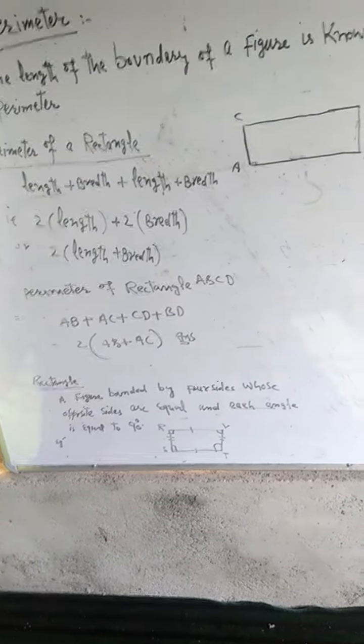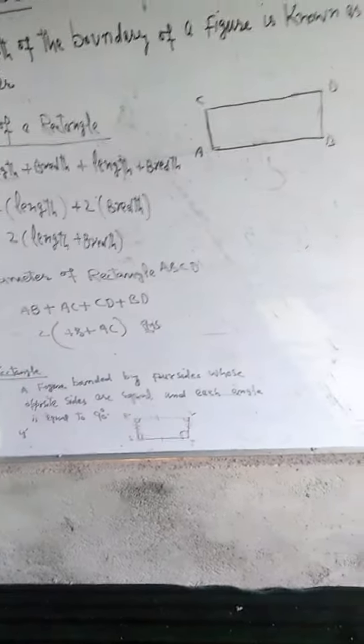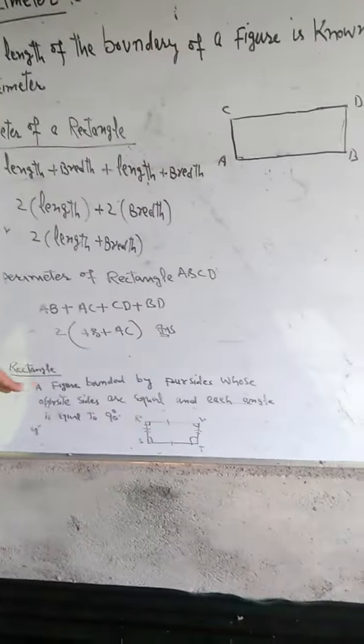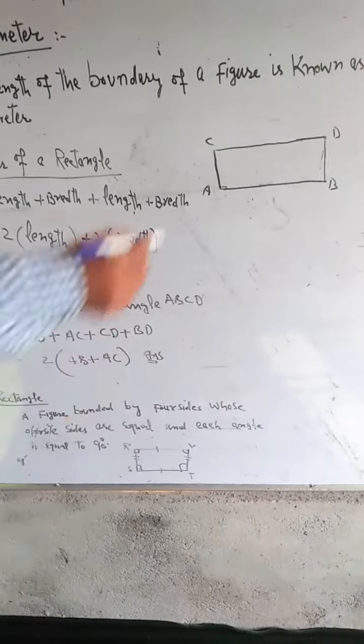A rectangle is a figure bounded by four sides, where opposite sides are equal and opposite sides are parallel.